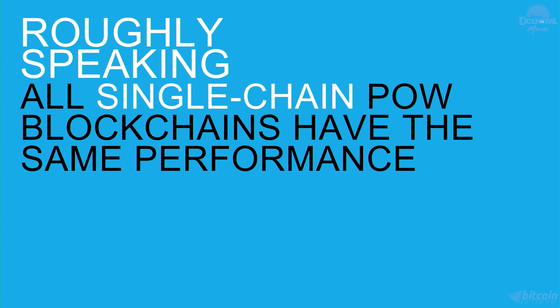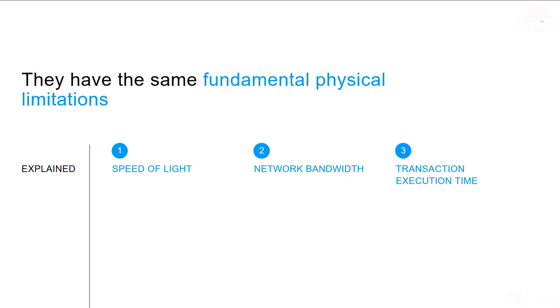Roughly speaking, all single-chain proof-of-work blockchains have the same performance. They have the same fundamental physical limitations: the speed of light, network bandwidth, and transaction execution time. These are the same no matter who you are, no matter what project you are, everybody is bound by them.